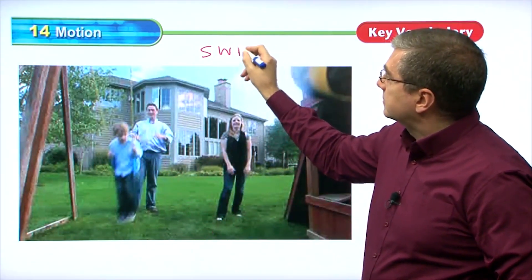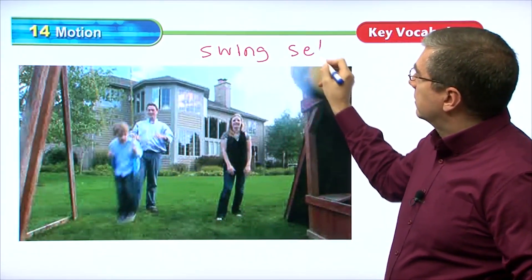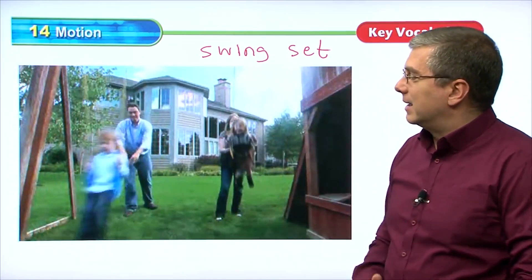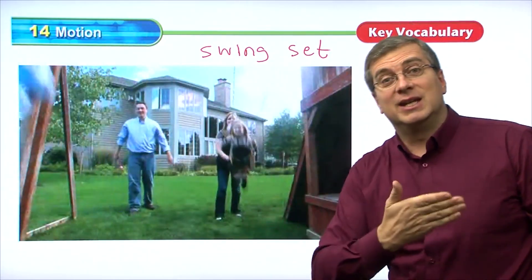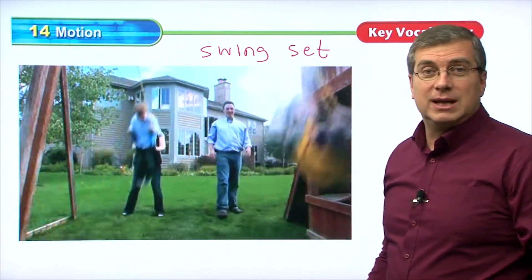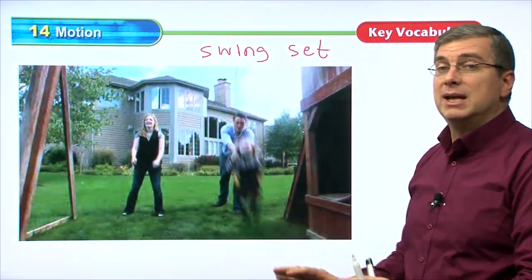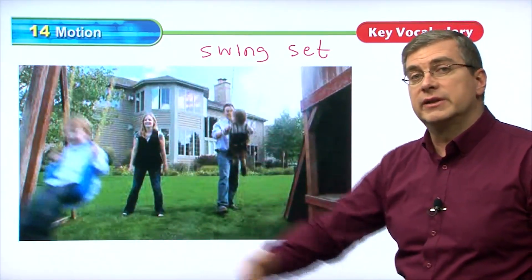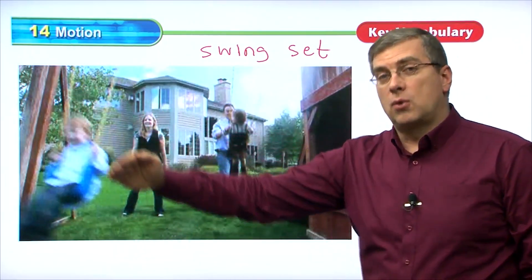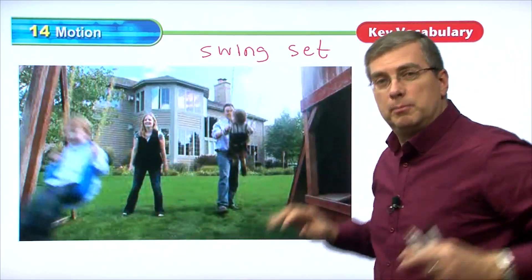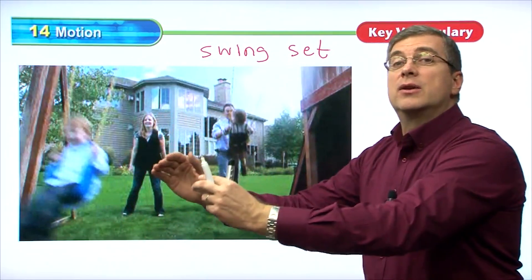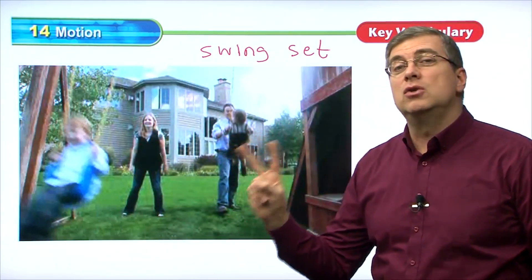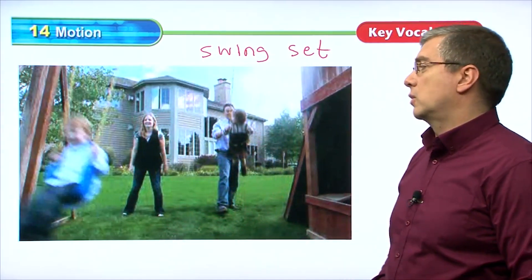Here is a very common scene — a swing set. This boy is on a swing. Mom and dad are pushing their children away from them. Of course, gravity is a force that pulls them back down. So there are two forces in this video: one is the push away from the people, and the other is gravity pulling them back to the ground. We have a constant motion back and forth — two forces acting at once.